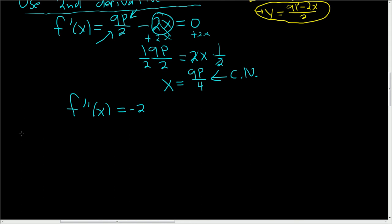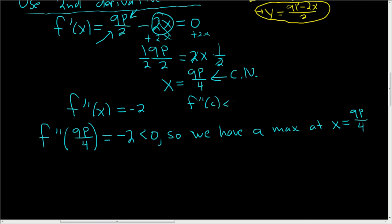Now what we do is evaluate the second derivative at the critical number. So f double prime of 9p over 4. Well, you just get negative 2. That's less than 0. So we have a max at x equals 9p over 4. That's what the second derivative test says. If the second derivative is less than 0 at a critical number, you have a max.